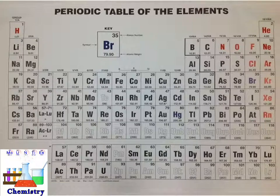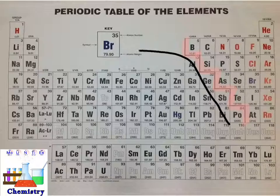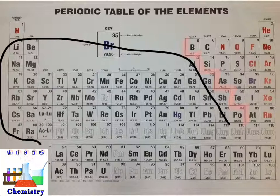The periodic table is a useful tool because the placement of the elements can communicate something about their properties or characteristics. For instance, all of the elements found to the left side of the stair-step line are known as metals. All of these elements would be considered metallic elements, including the two rows down beneath.